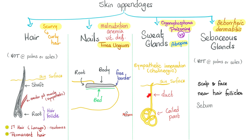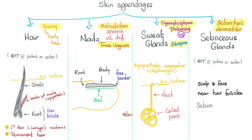Most of the sweat glands are in the dermis — I'm talking about the coil part. The duct will extend to the epidermis until it opens onto the surface of the skin. But some sweat glands will extend deeper, even to the hypodermis. Today's topic is fascia, which is the layer under the skin. We have two types: superficial fascia and deep fascia.